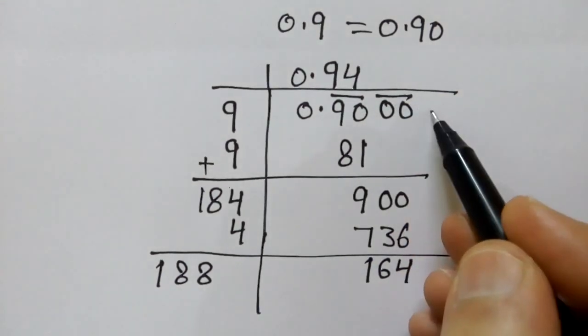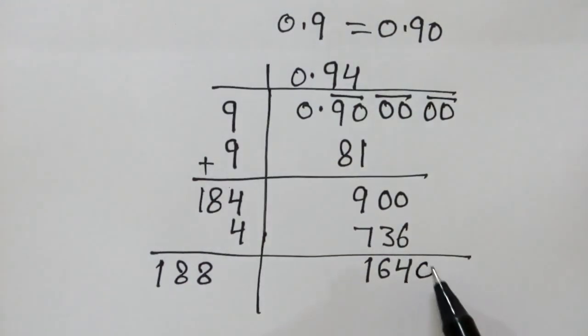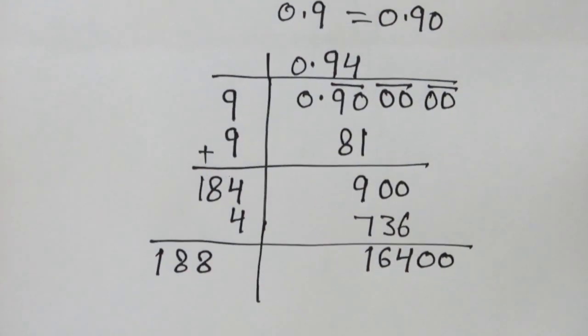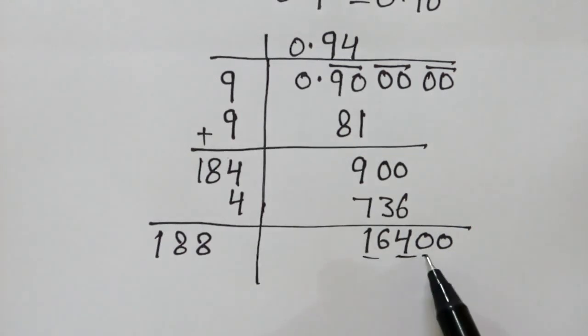Now again, we will increase zeros in pairs and write them down here in pairs. Now 188 will divide into 1640. This part only.